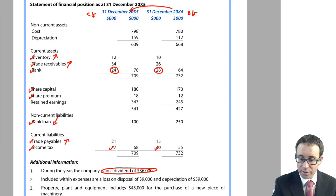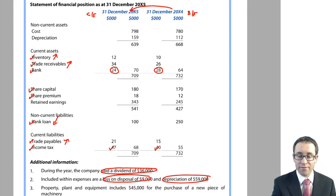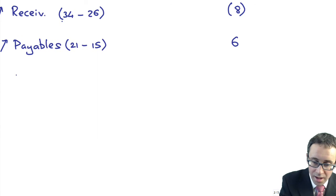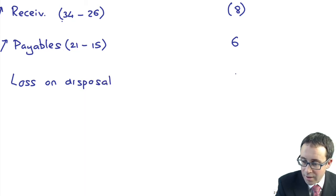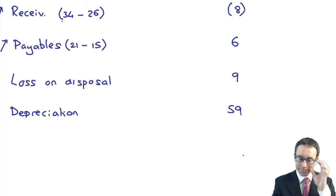Then we've got other bits of information. Depreciation. It starts talking about included within expenses, a loss on disposal of 9 and depreciation of 59. So back into my operating activities, I have a loss on disposal of 9. That's reduced my profit, so I add it back on. And my depreciation is a non-cash expense. The depreciation is 59. We're then going through after we've looked at that, the only bit to deal with is PPE and the investing activities.